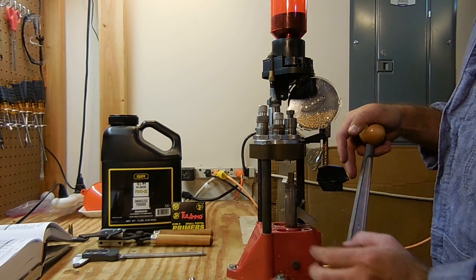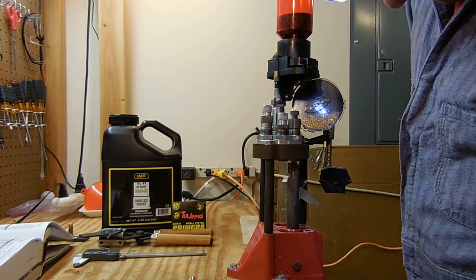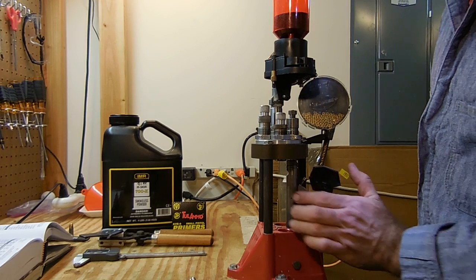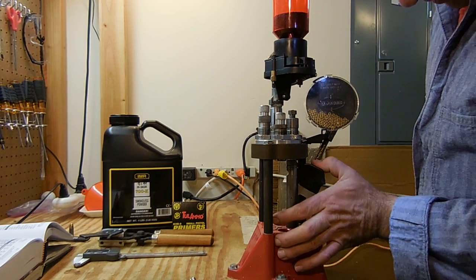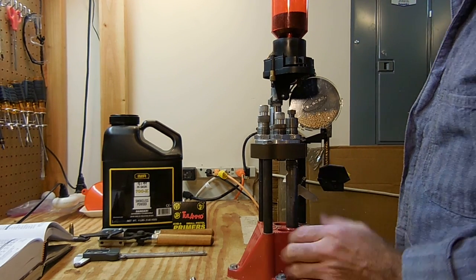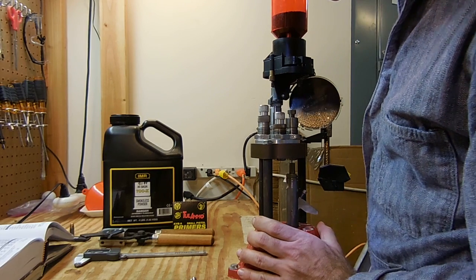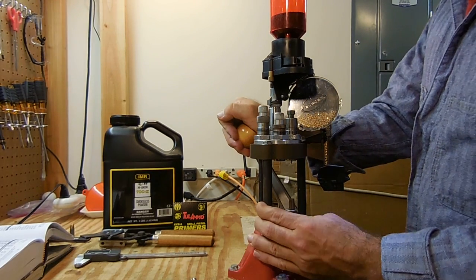The first step is to deprime and resize, and this is using the carbide die so I don't have to lube up the case. Next I'll go ahead and feed in a Tula primer, small pistol primer, and then I seat the primer.